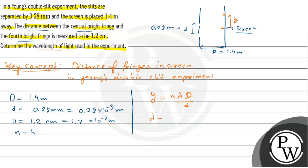So λ equals y·d divided by n·D. Putting in the values: λ = (1.2 × 10⁻²) × (0.28 × 10⁻³) divided by (4 × 1.4). Calculating this, we get λ nearly equals 6 × 10⁻⁷ meters.